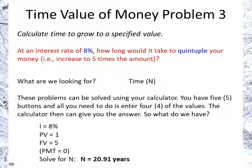So you solve for N and you get 20.91 years. It would take 20.91 years to quintuple the amount at a constant annualized interest rate of 8%.